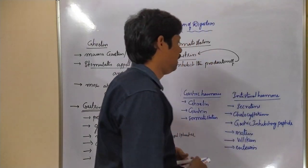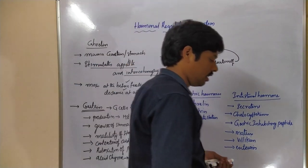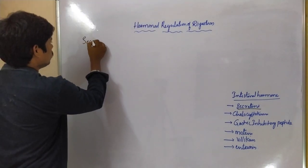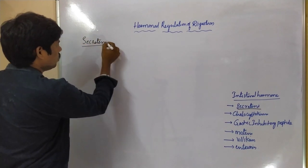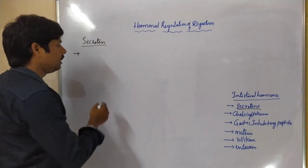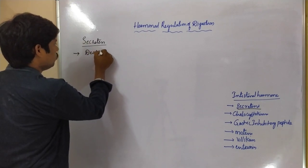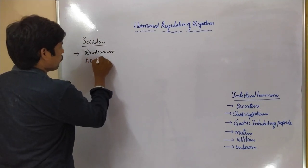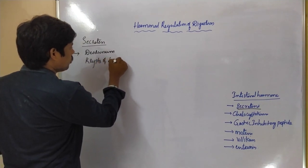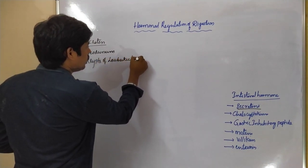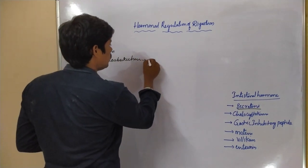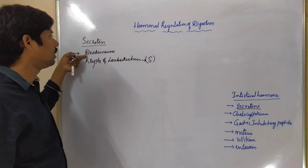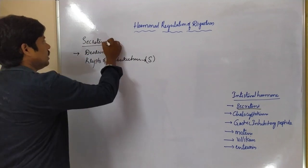Now let us see the intestinal hormones and their functions. Secretin hormone is released by the duodenum, specifically by the S-cells of the crypts of Lieberkühn that are present in the duodenum.